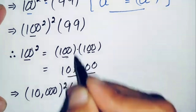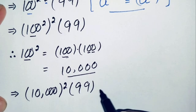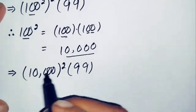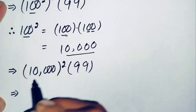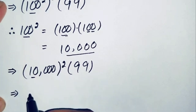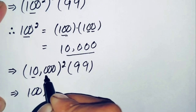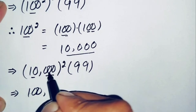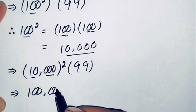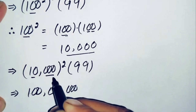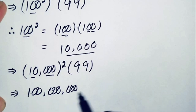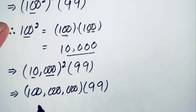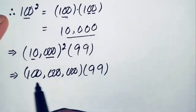Now we find the value of 10,000 squared. This is also very simple: the square of 10 is 100, and there are three zeros, so squaring doubles them to six zeros. Therefore 10,000 squared equals 100,000,000, which is 100 million. So the equation becomes 100 million times 99.